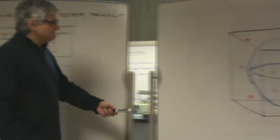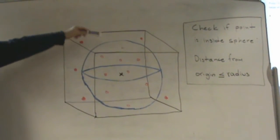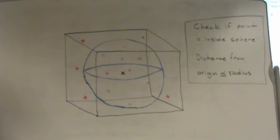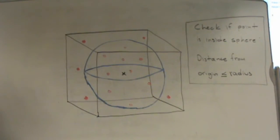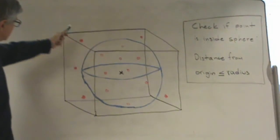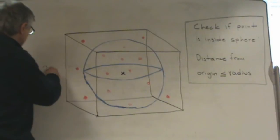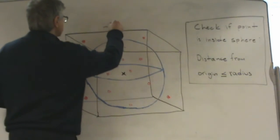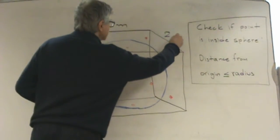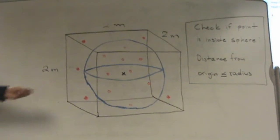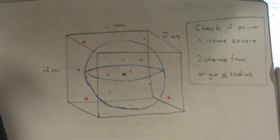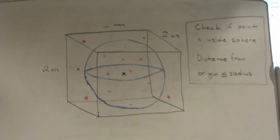Let's see here the sphere and the cube — the two-by-two-by-two cube — with points inside generated through a random number generator. The cube has dimensions two meters by two meters by two meters, and here is the sphere inside the cube. Our objective is to estimate the volume of the sphere.